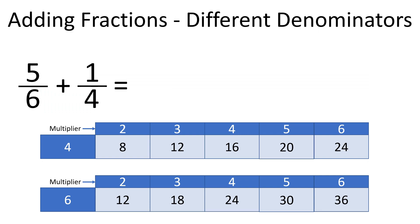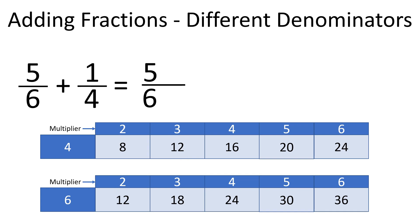As we said before, to add five-sixths and one-fourth, we will have to represent those fractions as equivalent fractions with a denominator of twelve. To do that, we have to multiply six in the denominator of the first fraction by two, as six times two is twelve. Since we multiply the denominator by two, we also have to multiply the numerator by the same number, so we multiply five by two.